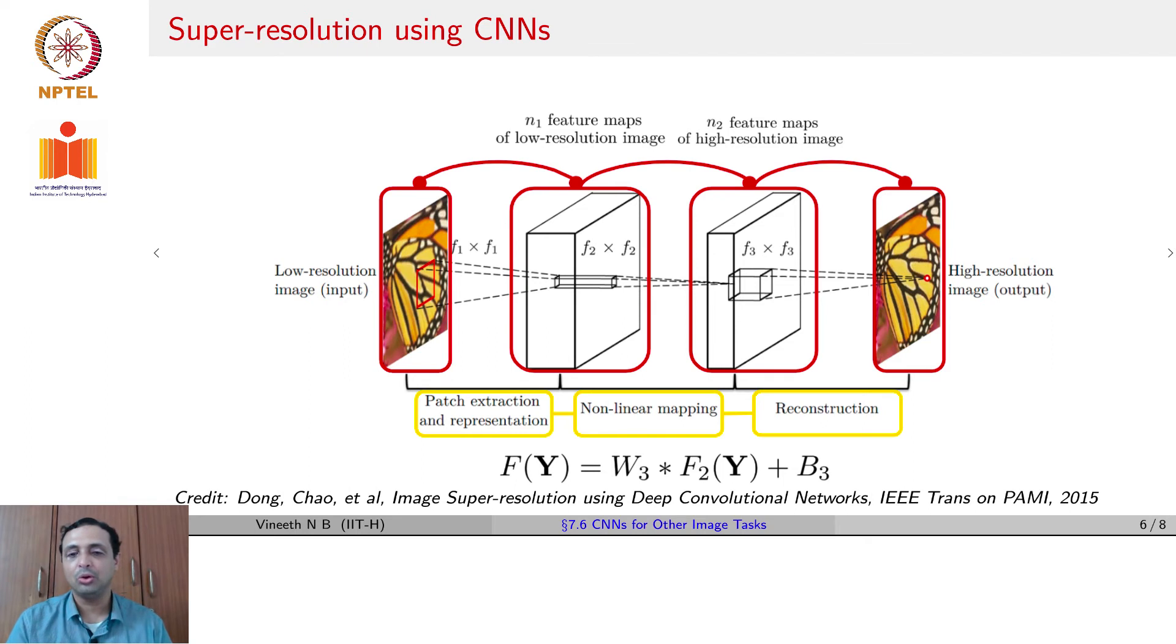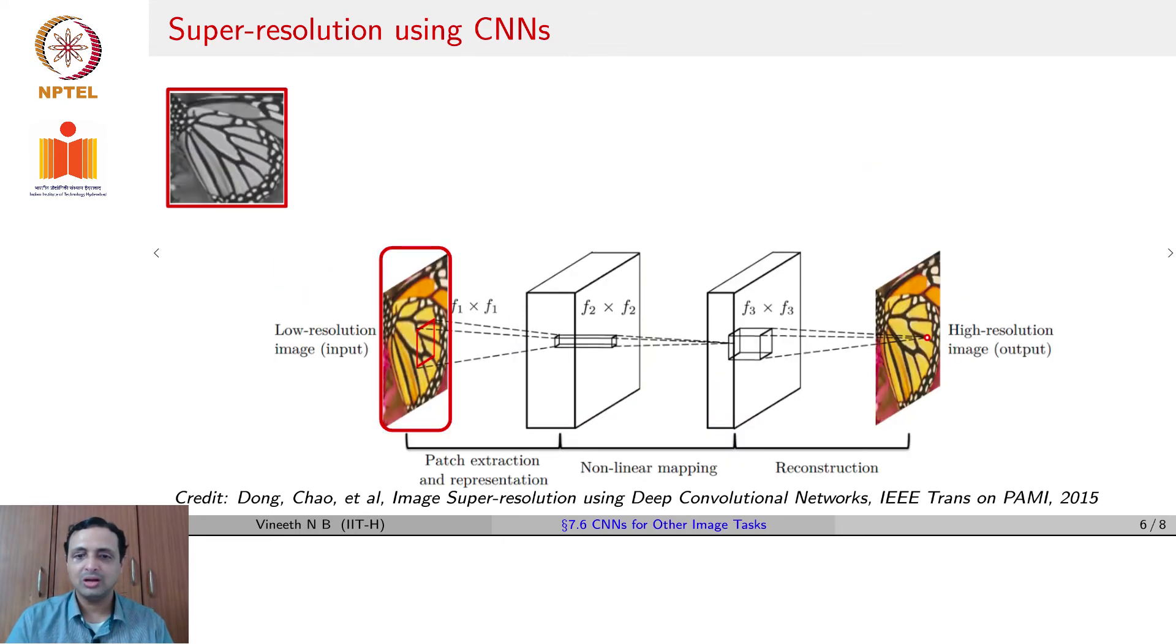Assuming that you have data of high-resolution versions of low-resolution images, you can use a pixel-wise loss to train this entire CNN.